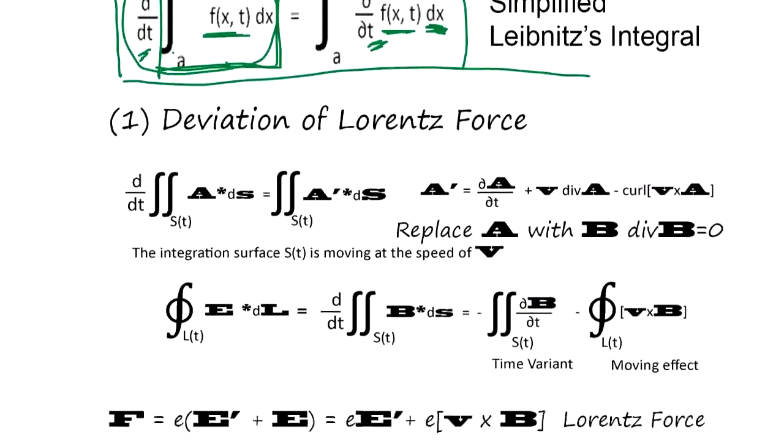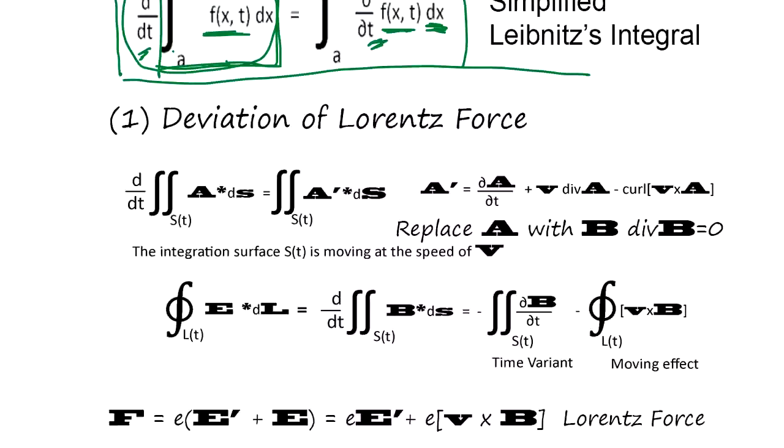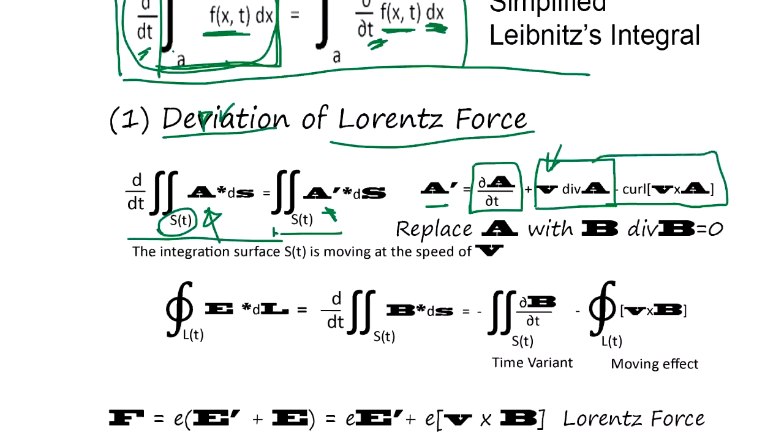let's look at derivation of Lorentz force, is actually, you take any vector potential, this integral, or vector potential, will be partial derivatives of A, plus V, this is boundary, boundary is moving. So, moving speed is V, divergent A, minus curl.